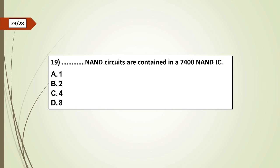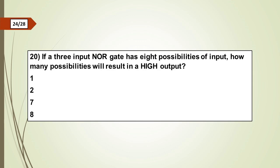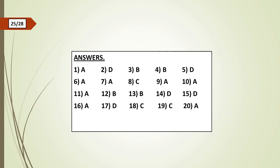Nineteenth question: Dash NAND circuits are contained in a 7400 NAND IC: a) 1, b) 2, c) 4, d) 8. Twentieth question: If a three input NOR gate has eight possibilities of input, how many possibilities will result in a high output? a) 1, b) 2, c) 7, d) 8.